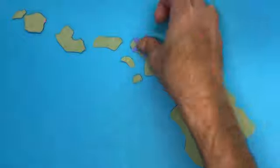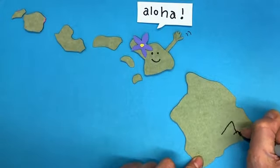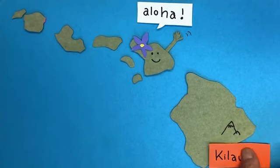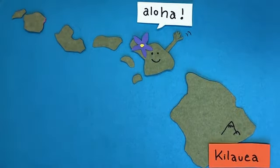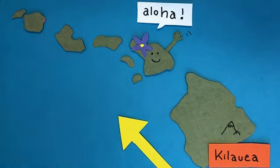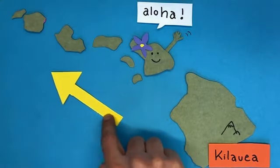The Hawaiian Islands are an example of a volcanic island chain created by a hot spot. The active volcano of Kilauea is currently located above the hot spot and a long chain of extinct volcanoes stretches out in the direction that the plate is moving.